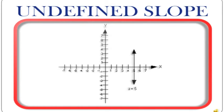Undefined slope is the opposite of slope of zero. With an undefined slope, the line and equation only pass through x, and the y value is zero. The equation will be x equals any number.